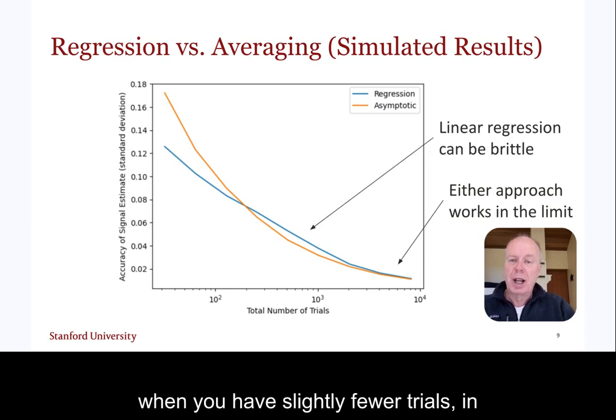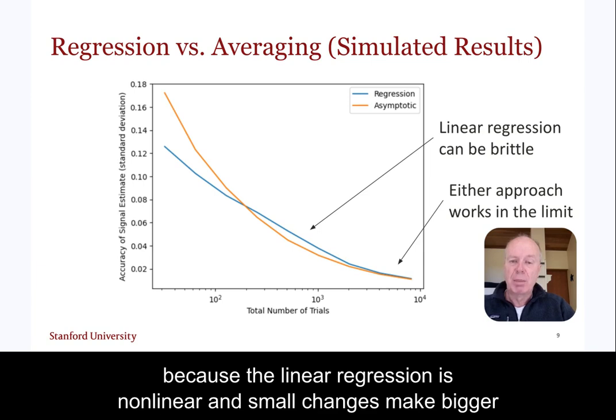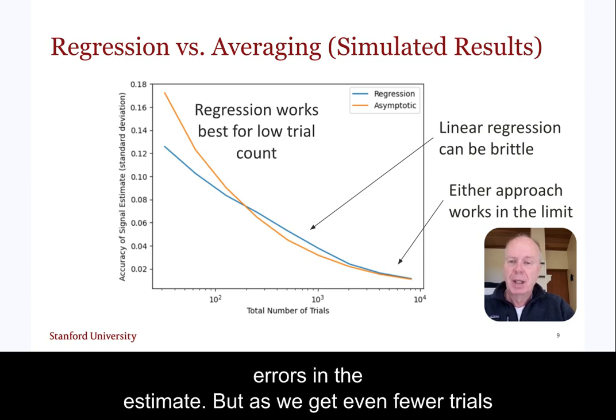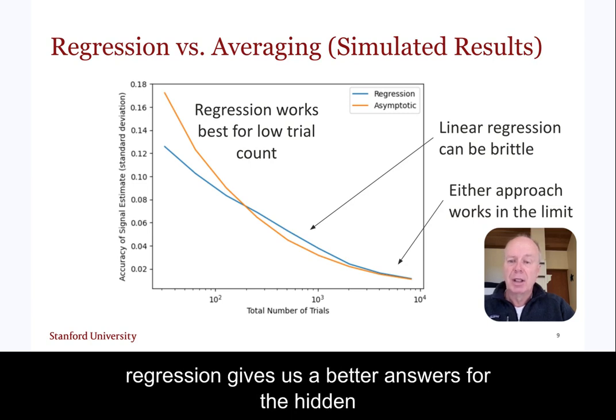When we have slightly fewer trials, in this case around 1000, the averaging approach is more accurate, perhaps because the linear regression is non-linear and small changes make bigger errors in the estimate. But as we get even fewer trials, the estimation error in the conventional averaging approach grows, and the linear regression gives us the better answers for the hidden signal.